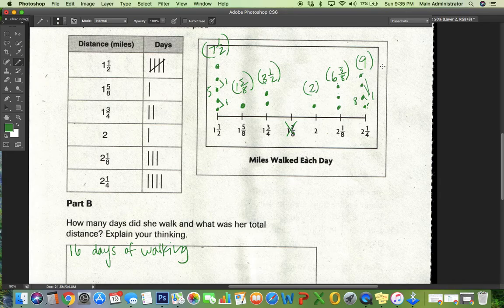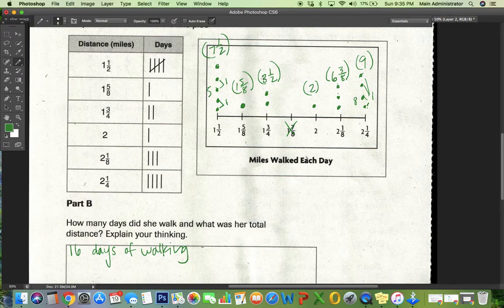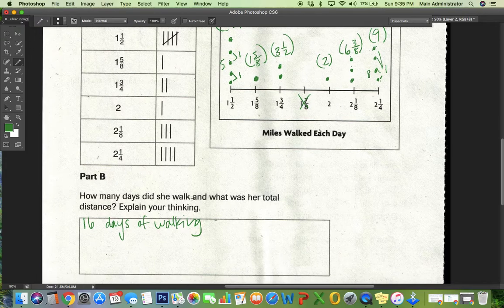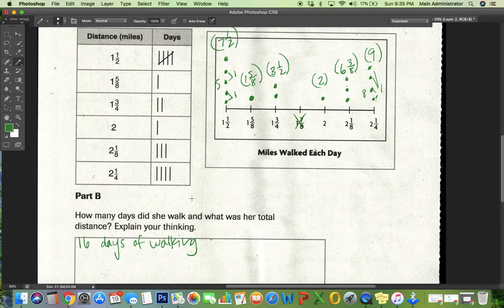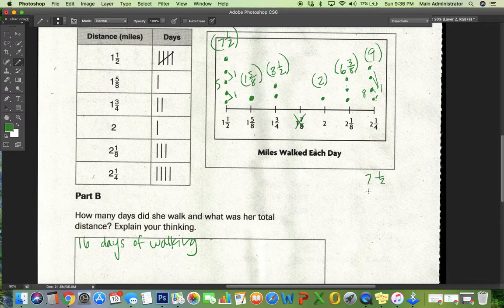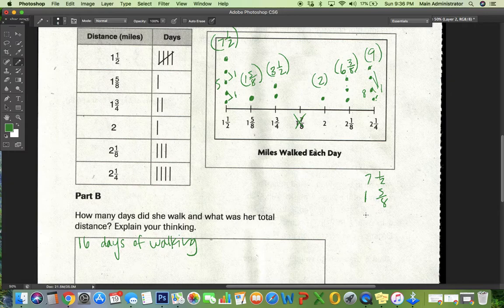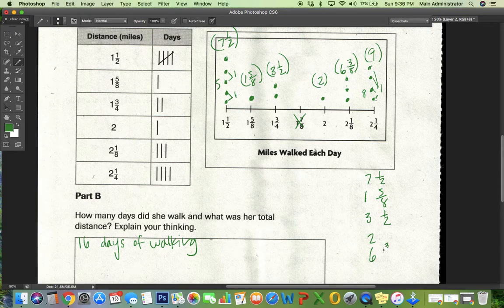And now if I have to add my full distance, I have to add all these numbers up. So I have seven and a half, one and five-eighths, three and a half, two, six and three-eighths, and nine. I'll add them up on the side here. Seven and a half, one and five-eighths, three and a half, two, six and three-eighths, and a nine.